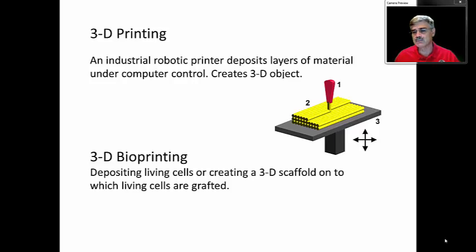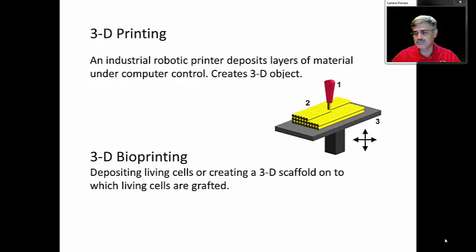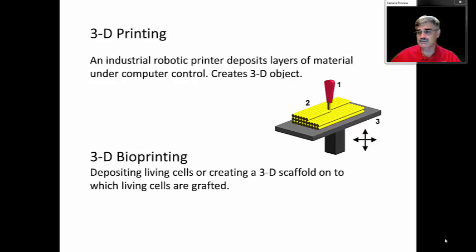In 3D bioprinting, a scaffold is created on which living cells grow to replicate human tissue. This is an extremely exciting field with many potential applications, especially if we can use our own cells to replace body parts. Since a video is worth a thousand words, we're going to pause and I'll show you a video clip that describes 3D printing and 3D bioprinting.